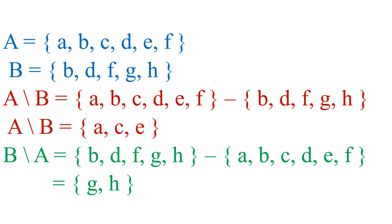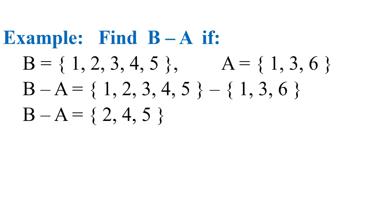Now let us look again at the same example. We have two sets A and B. A difference B is {A, C, E}. Now what is B difference A? In B difference A we write all elements of set B that are not in A. B, D, and F are common to both sets so they are not included. G and H are not common to both sets so they will be written in B minus A. Note that C and E are elements from set A and are not written in B difference A, since B difference A contains only elements from set B.